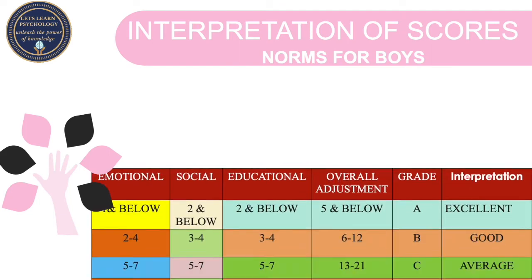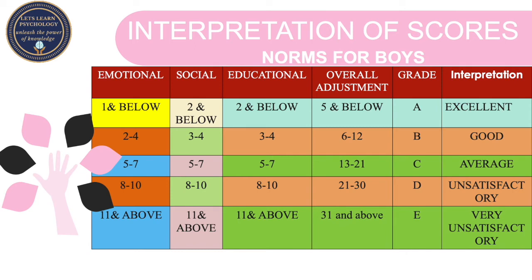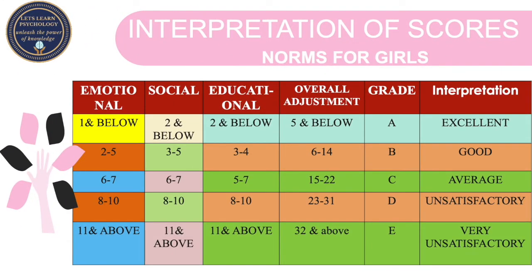Interpretation is based on norms available for boys and girls separately and is made on a 5-grade key ranging from excellent adjustment to very unsatisfactory adjustment. Scores on each domain below 2 or 1 indicate excellent adjustment, while scores above 11 in each domain indicate very unsatisfactory adjustment. Overall, a score of 5 or below indicates excellent adjustment for boys, while a score of 31 and above indicates very unsatisfactory adjustment. For girls, a score above 11 in sub-domains and above 32 overall indicates maladjustment.